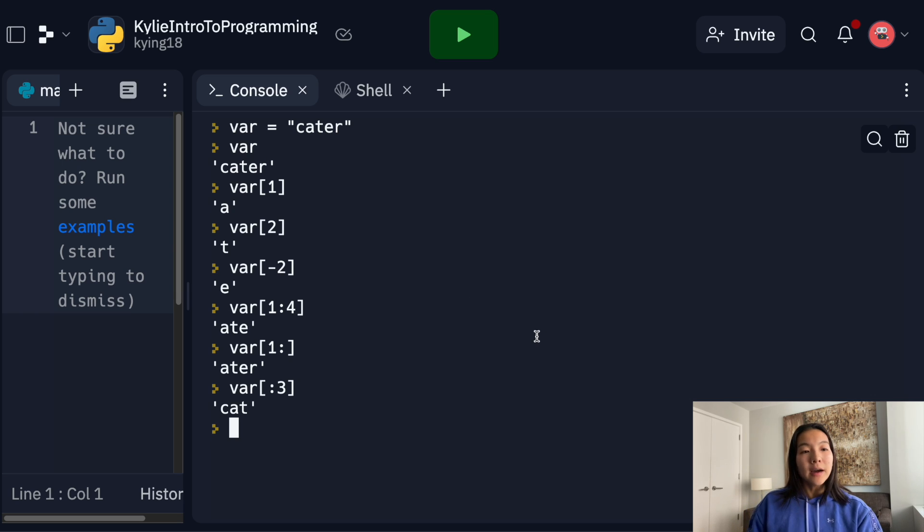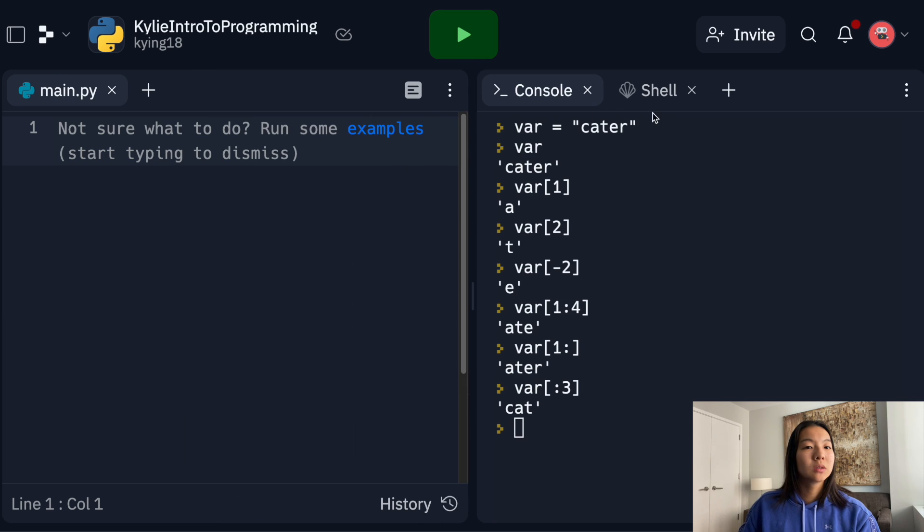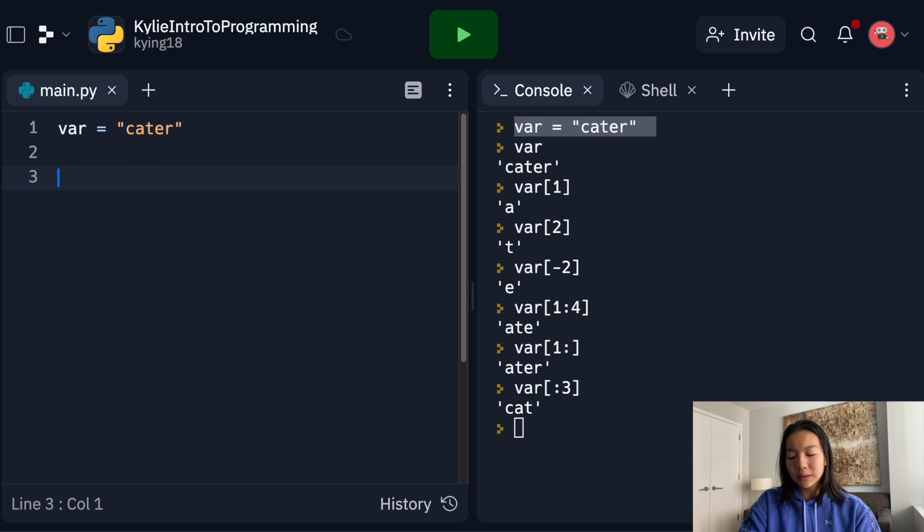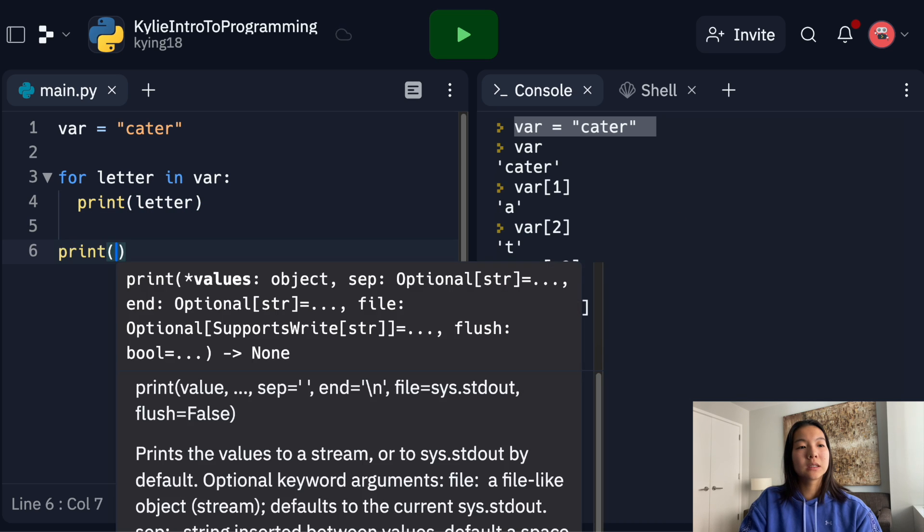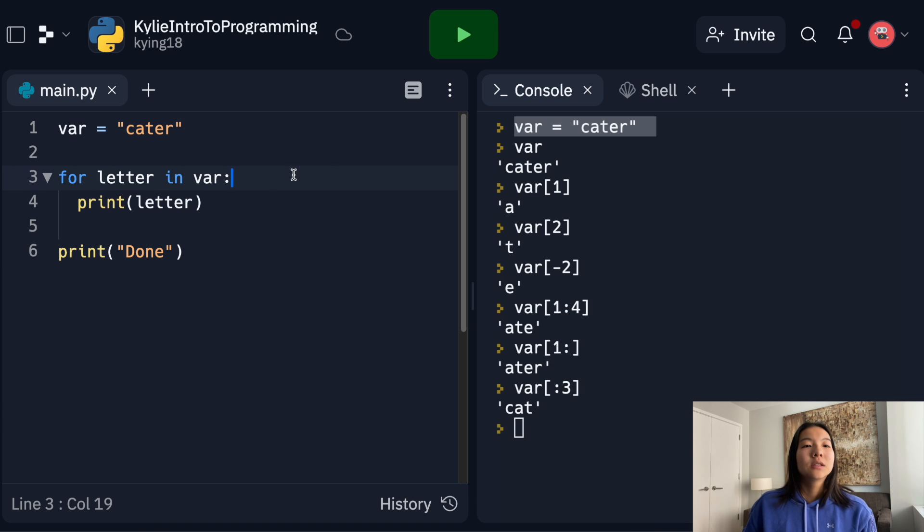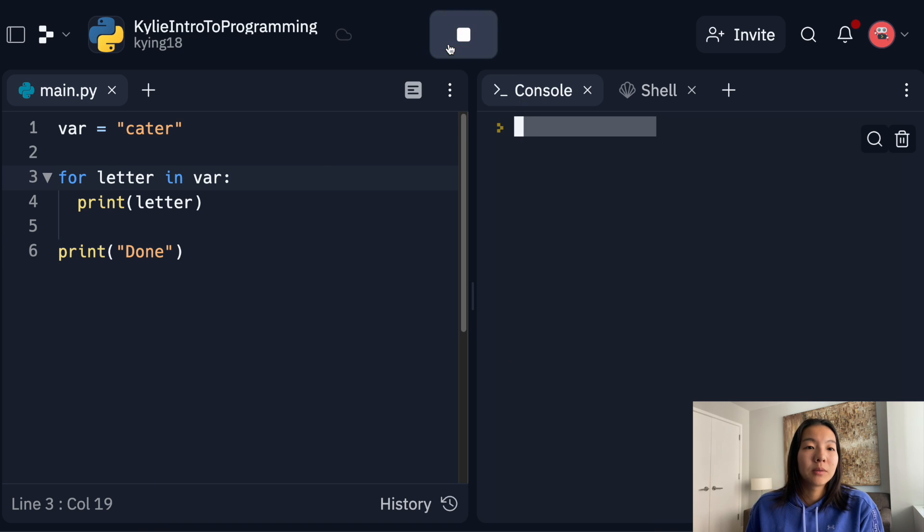And finally, we did a little bit of iteration. So here, I'm actually going to run this script. I'm going to set var equal to cater in the script. And then I'm going to say, for each letter in this variable var, I'm going to print that letter. And then at the very end, I'm going to print done. So this should be exactly what we saw. I'm going to run this. And you'll see that we get C, A, T, E, R on separate lines, which means that it's printing five different times. And then it comes over here and prints done.